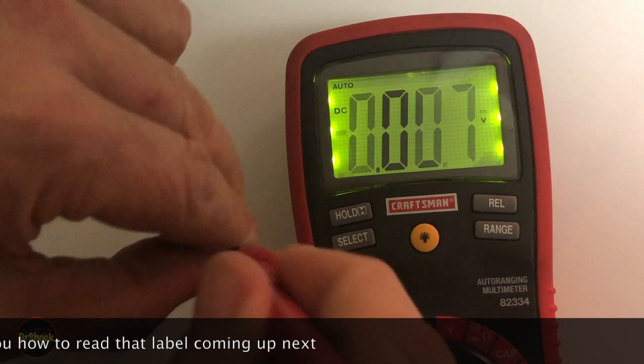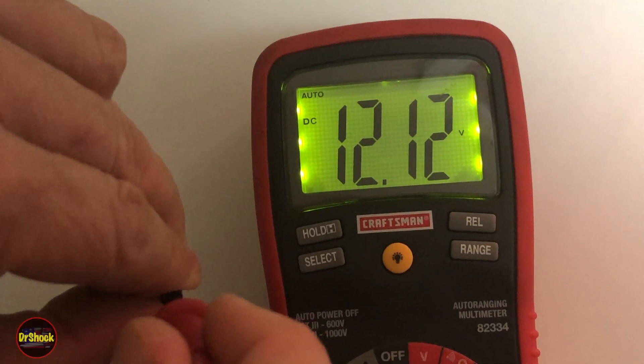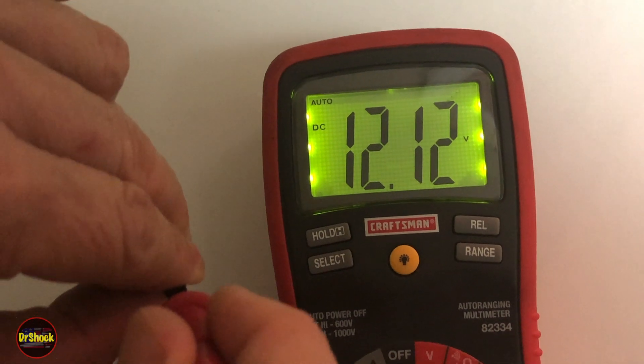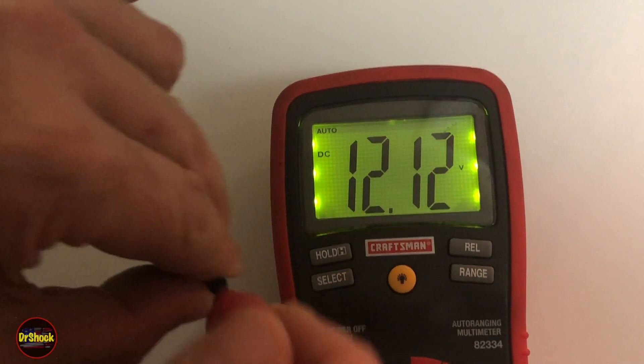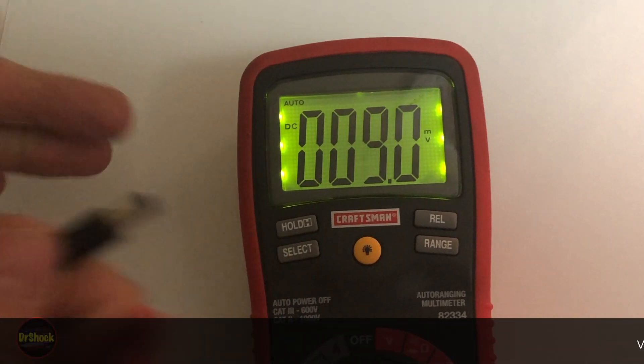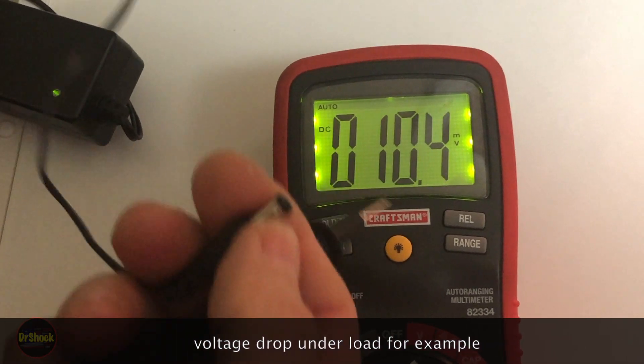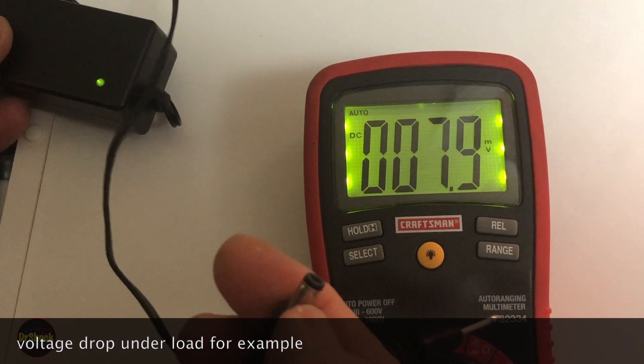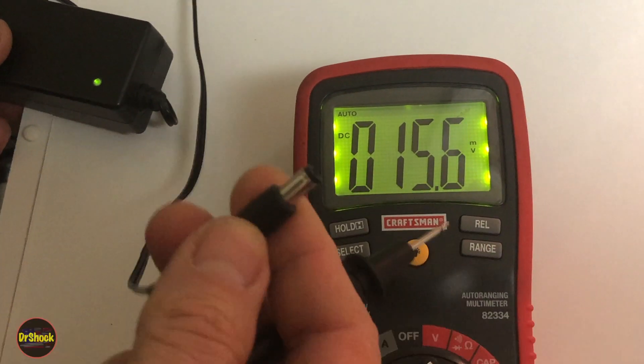It says it's outputting 12.12 volts, so what's up? So this is an example where a simple test like this is insufficient to test the power supply. The problem that's happening is not a voltage problem. The problem that's happening is when you get a draw or amperage pull on this power supply that it's failing.